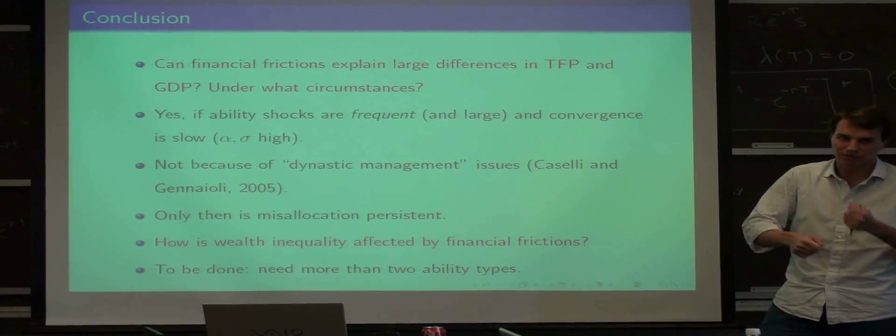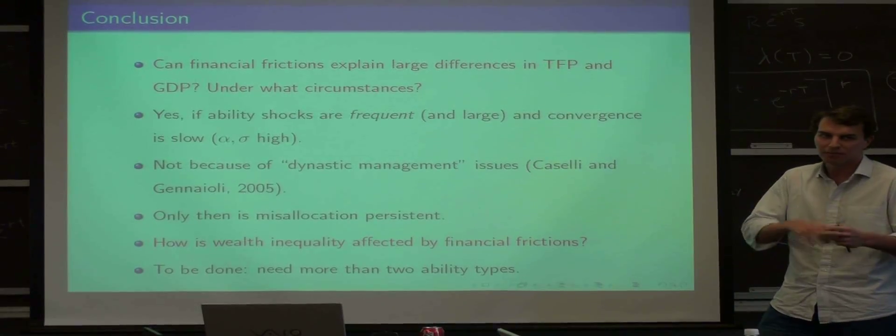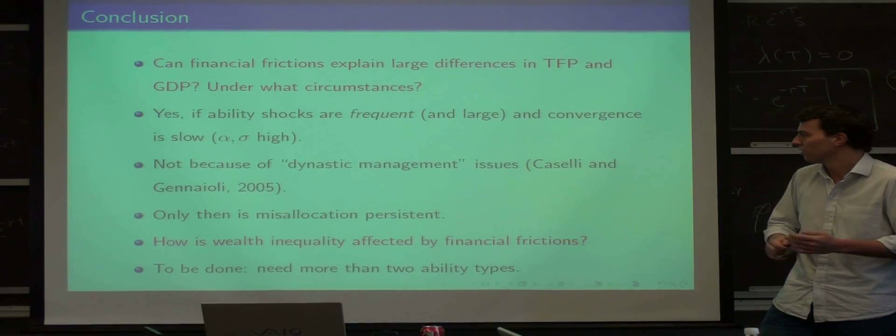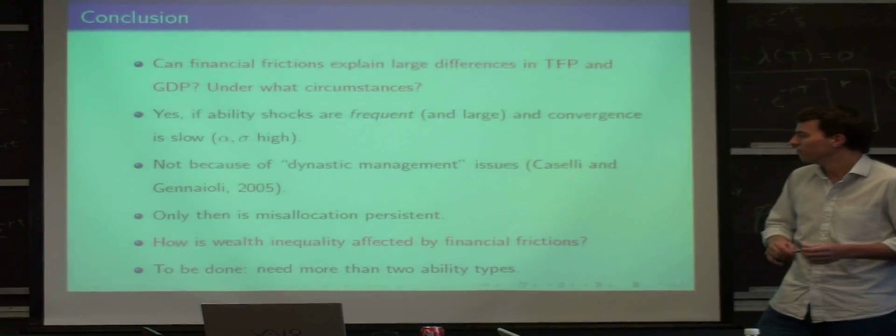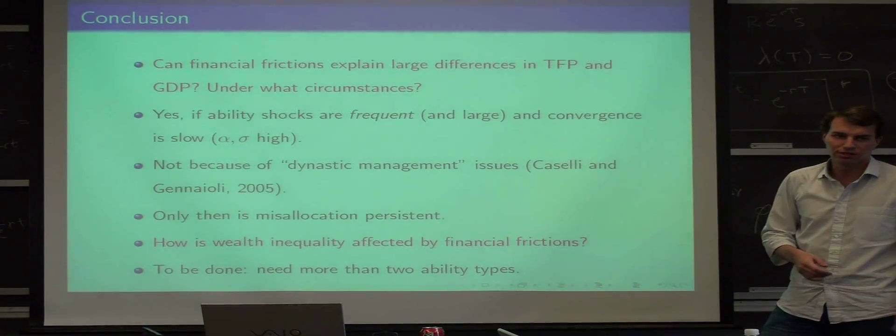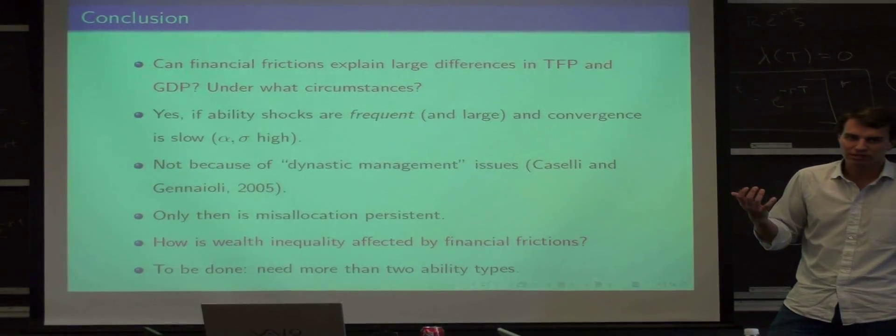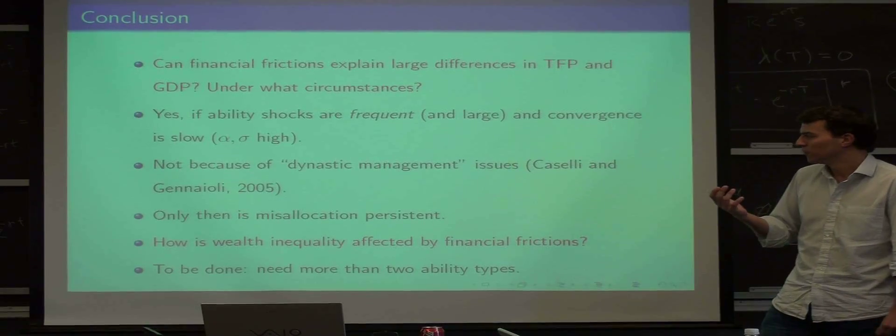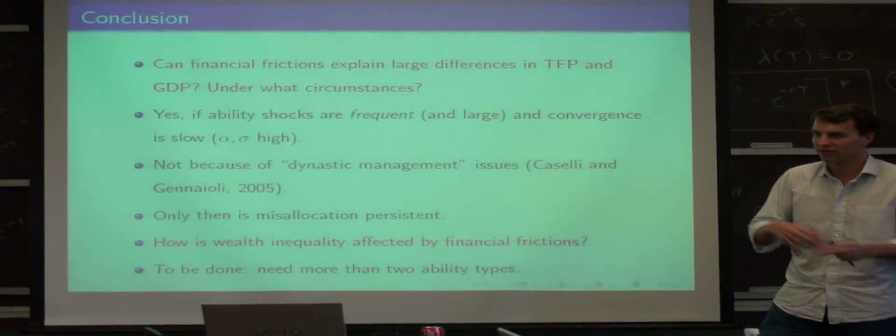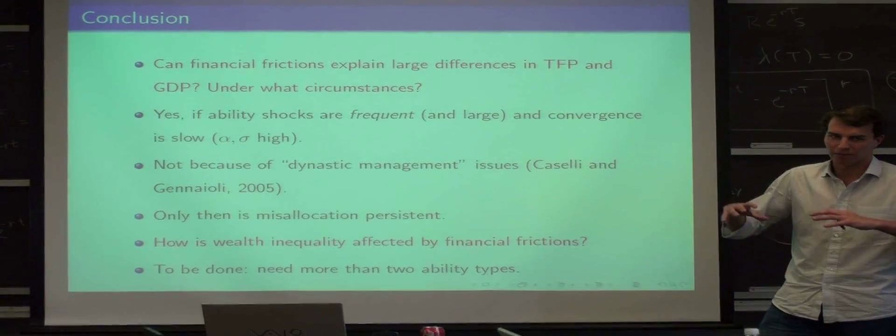So there are these two counteracting forces, right? You're being hit by shocks, but at the same time you're saving yourself out of the borrowing constraint. What we don't think is an important issue is these dynastic management issues, where the child is a dummy and the parent is smart, and therefore the capital is misallocated.